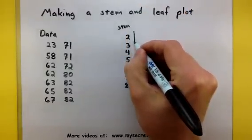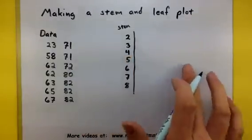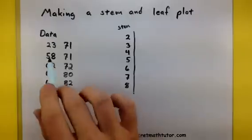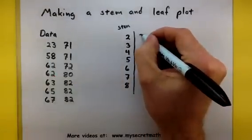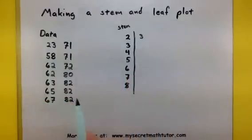I'm going to put a big vertical line to separate these out from the leaves. Here's where I start to collect all the other numbers. So if I have a 23, let's put the 3 there. When I get to this 3, well, I don't have any 30's, so I'm going to leave that one blank.